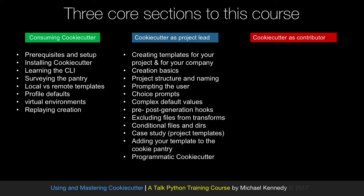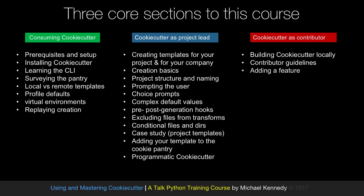We'll also talk about programmatic CookieCutter — CookieCutter is both a CLI and an API. So if you want to make any sort of application, whether a command line interface, a GUI, a web app, or whatever, that generates these projects, you can wrap up CookieCutter and leverage it for all the internal work while providing a nice facade on top of it. Finally, if you want to contribute to or modify CookieCutter, we'll cover building it locally, the contributor guidelines, how to add a new feature, and the pull request process. As part of this course, we'll actually add a new feature or fix a bug in CookieCutter and go through the whole process to get it submitted and accepted back into the project.